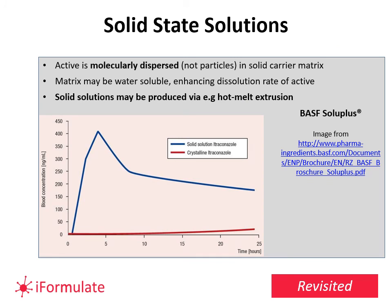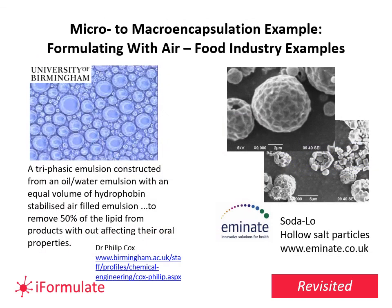Solid state solutions for encapsulation are now done a lot with hot melt extrusion — you disperse the active molecularly, not as a particle, in a solid carrier matrix, and then you can delay how it's released. An example is the drug itraconazole — when encapsulated this way using a product from BASF, it remained available and continued releasing into the blood, whereas with the crystalline form there was nothing available. That's what they call a solid state solution, and there are different ways of producing it.